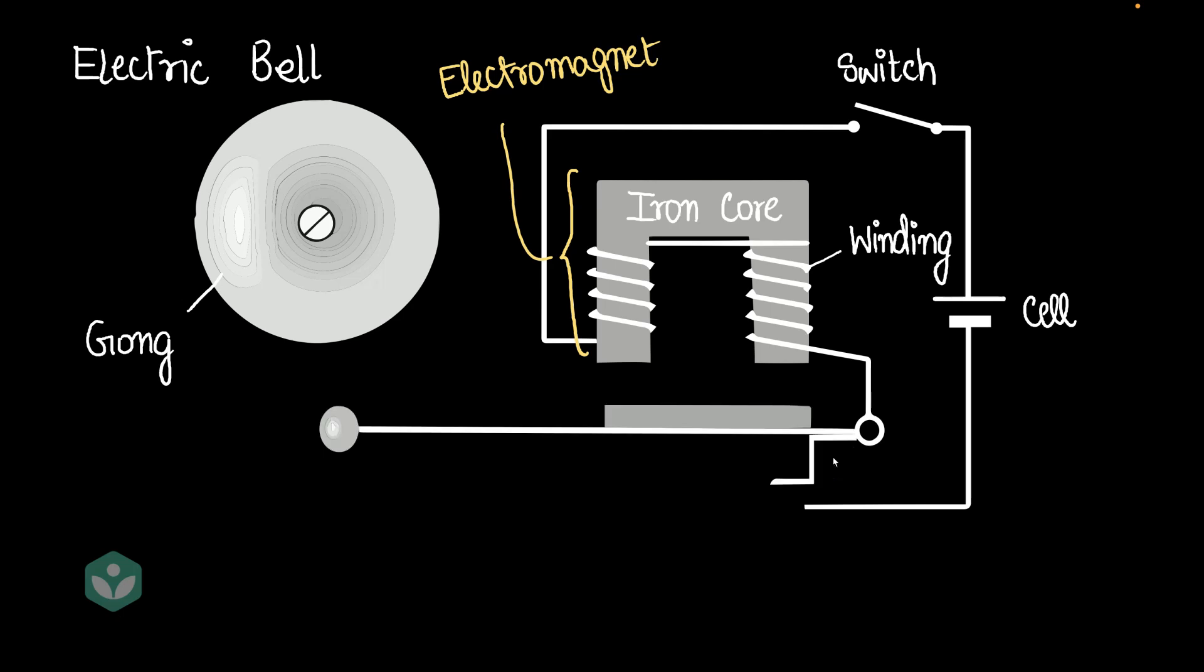We have this contraption that looks like this. Let me explain what this is. So at one end, we have what we call the striker. The striker is a metallic ball that goes and hits the gong. And when it hits the gong, it produces a sound. The striker is connected to an arm called the lever arm, and the lever arm is further connected at this end to a spring.